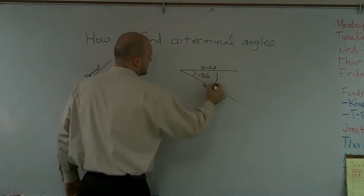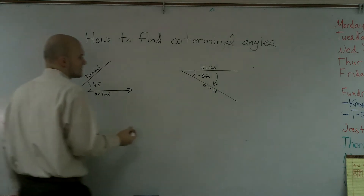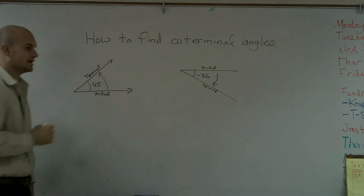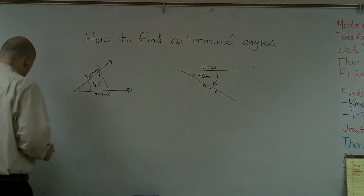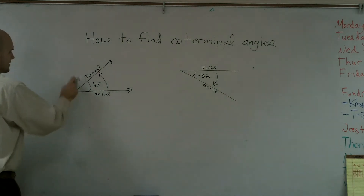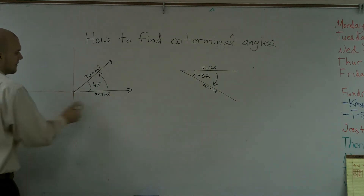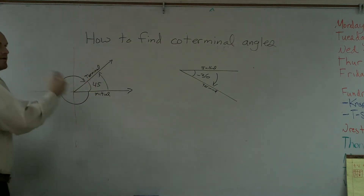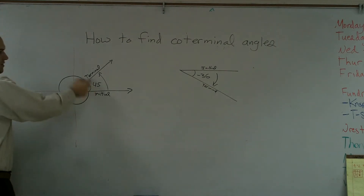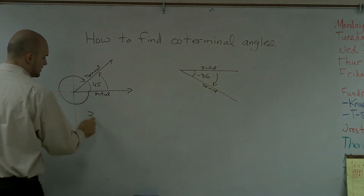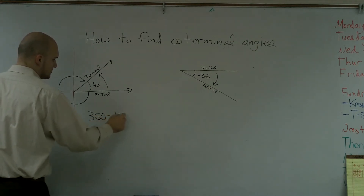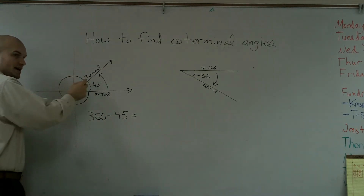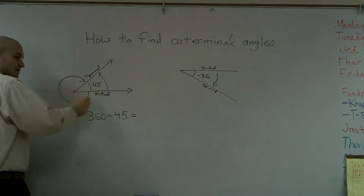Let's start with this problem. We always go counterclockwise. So if I open up a problem this way, if I want to find the co-terminal angle — this axis is going up there — well, now I can go in the other direction. So if a whole way around is 360, and I know I'm going all the way around except for 45 degrees, I do 360 minus 45. I'm going in the negative direction.